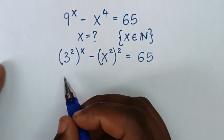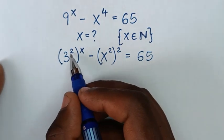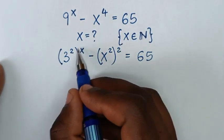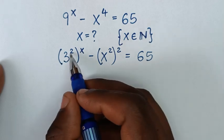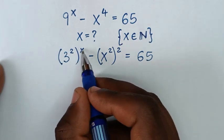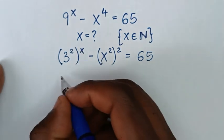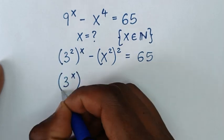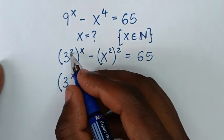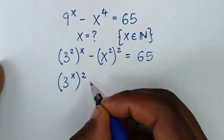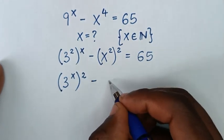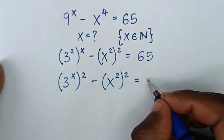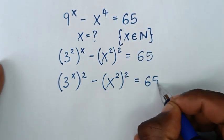In the next step, we want to make the square outside the bracket. So this power of 2 will be taken outside, and the power of x will be taken inside the bracket. So it will be 3 power of x inside the bracket. This power of 2 will be taken outside the bracket, minus x squared, bracket squared, is equal to 65.